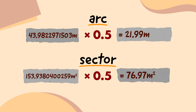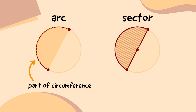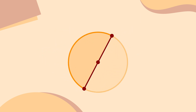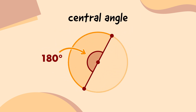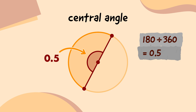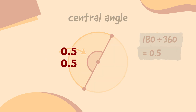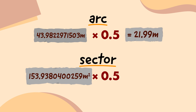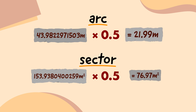You got it! So the arc is part of the circle's circumference, and the sector is part of the circle's area. We need to work out the full circumference and area first. Then, we work out how big the portion is by measuring the central angle of the portion and dividing it by 360. Finally, we multiply the answer by the circumference to get the arc length, and by the area to get the sector area.